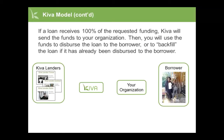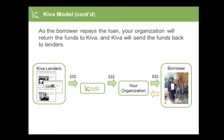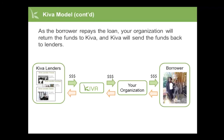If a loan receives 100% of the requested funding, Kiva will send the funds to your organization. Please note that based on the type of partnership your organization has with Kiva, you may receive however much money was raised on Kiva's platform, regardless of whether a loan is 100% funded. You will learn more about functionalities related to your organization's partnership at a later stage. You will then use the funds to disperse the loan to the borrower, or to backfill the loan if it has already been dispersed. As the borrower repays the loan, your organization will return the funds to Kiva, and Kiva will send the funds back to lenders.